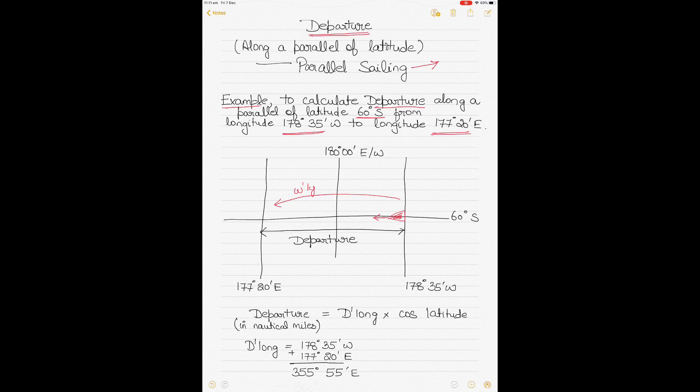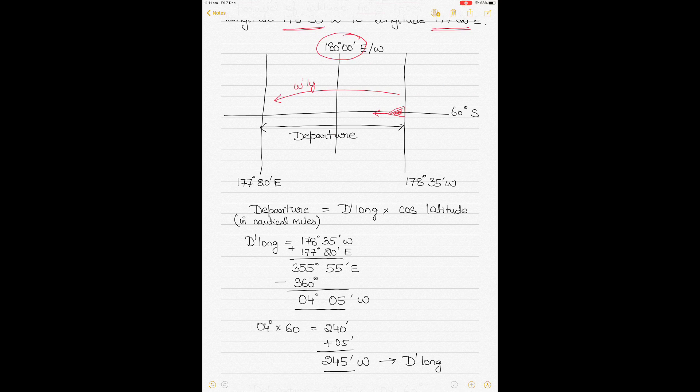Because it's close to the correct anti-meridian. So in this case, the formula for calculating the departure is departure in nautical miles, because it's a unit of distance, equals D long multiplied by cos of the latitude.